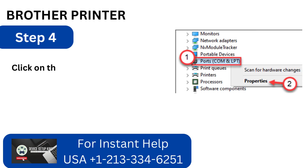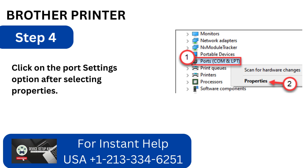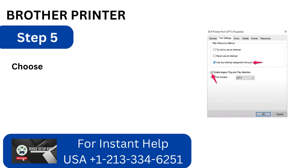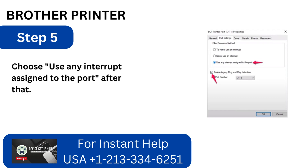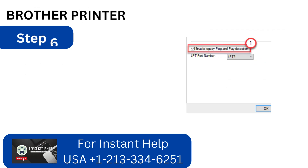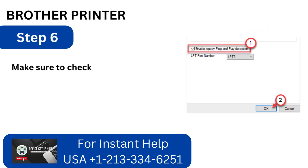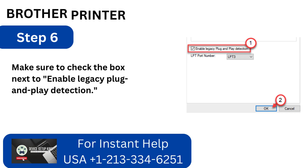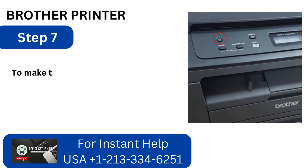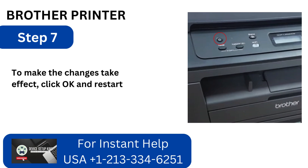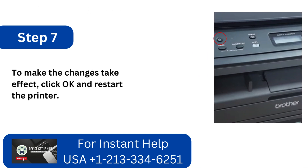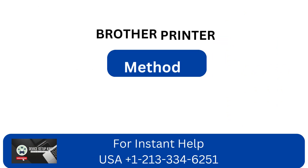Step 4: Click on the Port Settings option after selecting Properties. Step 5: Choose Use Any Interrupt Assigned to the Port. Step 6: Make sure to check the box next to Enable Legacy Plug and Play Detection. Step 7: To make the changes take effect, click OK and restart the printer.